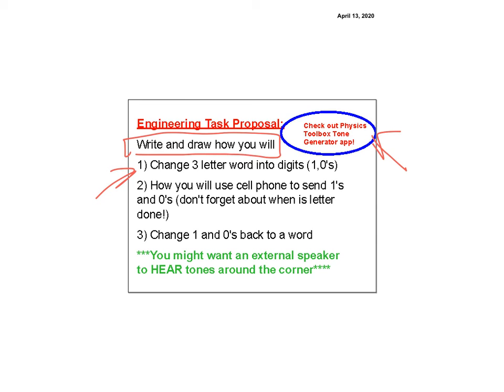How are you going to do this? How are you going to change a three-letter word into digits? So we're going to learn how to do a spreadsheet. That's going to do some of that for us. And then how will you use cell phones to send ones and zeros? So that's where you're going to need something like the tone generator. Or you're going to need visible light to be able to do it. And then you need to be able to change it back into ones and zeros to make a word. All right? It does say you need to use an external speaker, but that's only if we were doing it out loud. And I don't think, we're going to have to modify it slightly, which we will do next week.